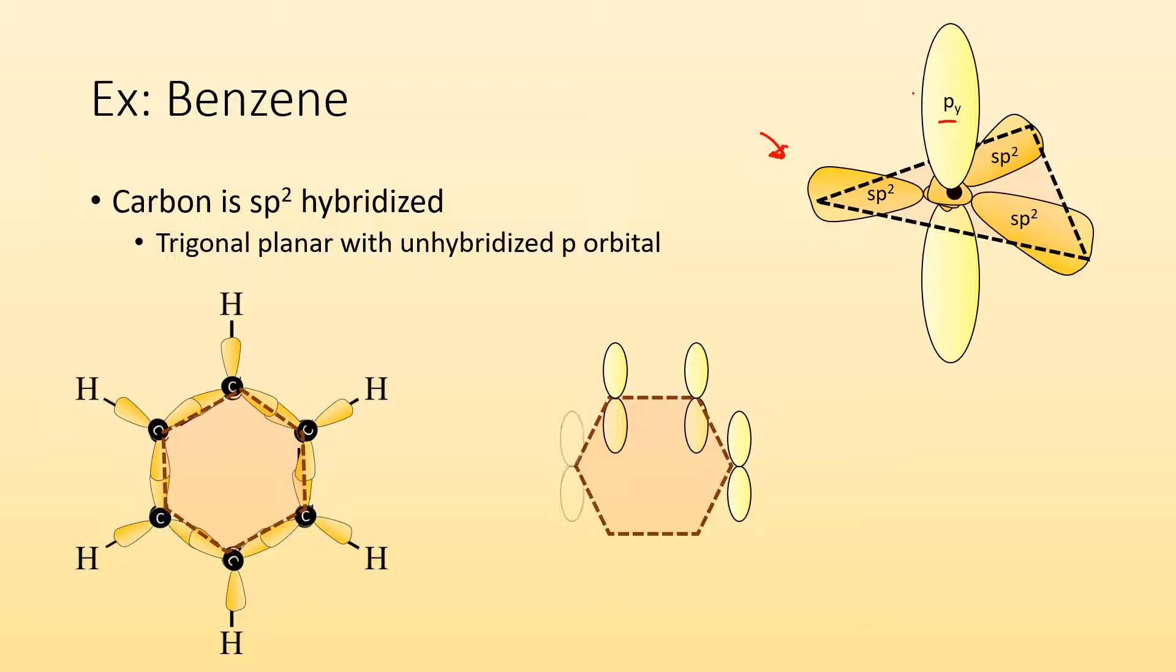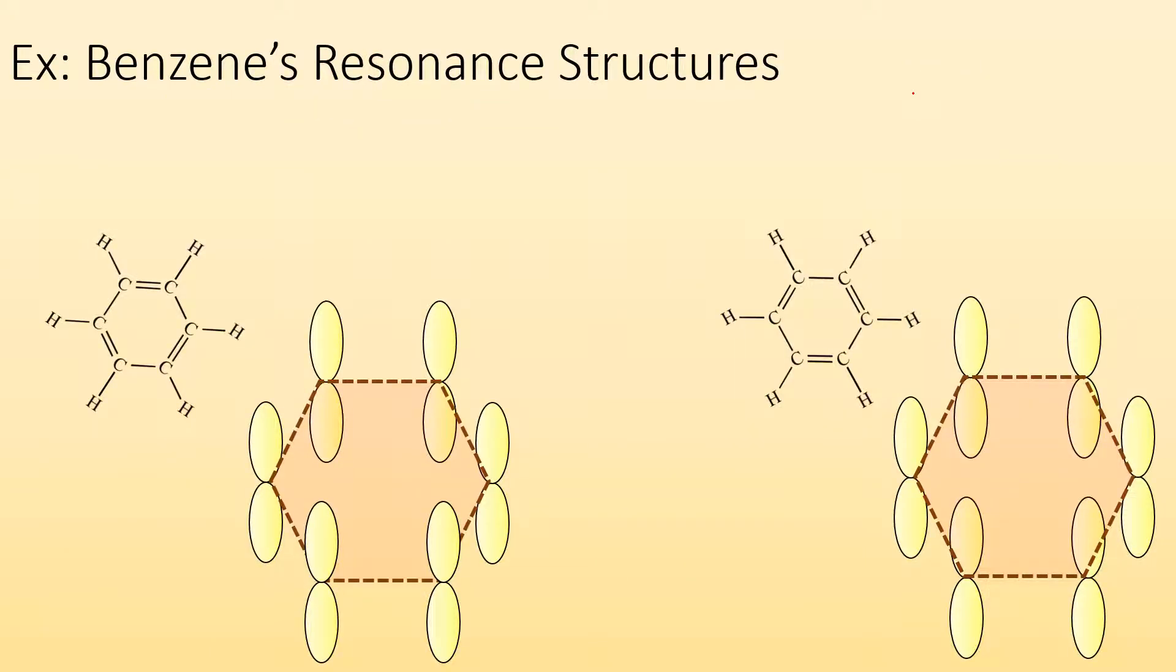You can see at each point on the hexagon, I have these unhybridized p orbitals. Each of them have an electron in them. So let's see what happens with these resonance structures.